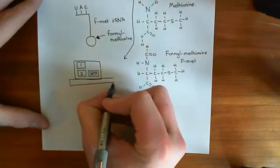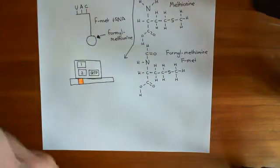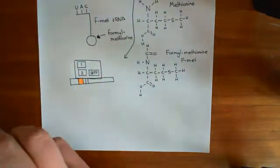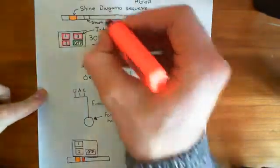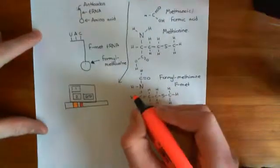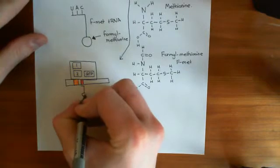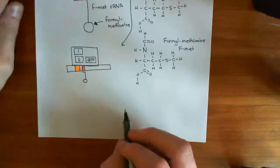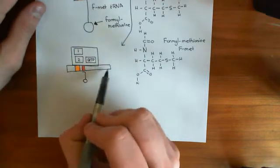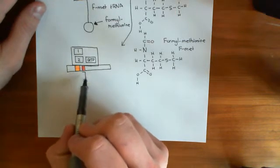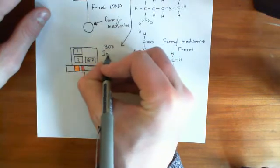Here's our mRNA strand. We've got our Shine-Dalgarno sequence still there, and then we've got our start codon — our AUG in the mRNA here. So this is our start codon. We've now brought in the formylmethionine tRNA and bound it in there. This whole structure — the 30S ribosomal subunit still bound to initiation factors 1 and 2, this GTP molecule, the mRNA, and this first tRNA with its formylmethionine — is known as the 30S initiation complex.